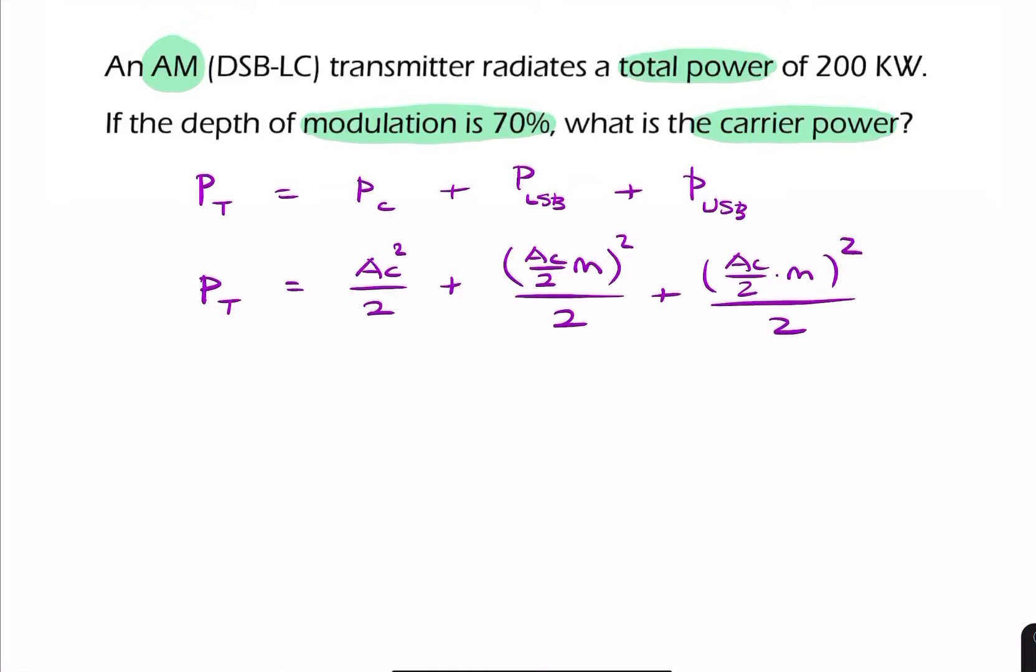So remember, what we're after is the carrier power, AC squared over 2. So we might as well take AC squared over 2 common. So we've got 1 plus, here we have 2 squared over 2 is 8, so it's M squared over 2. And that's our total power.